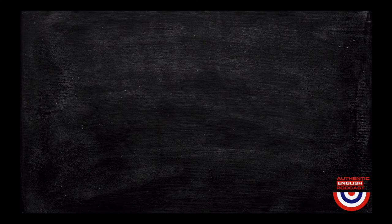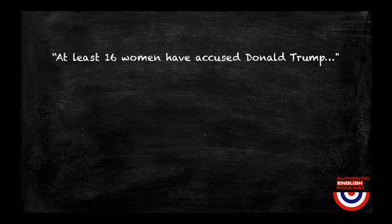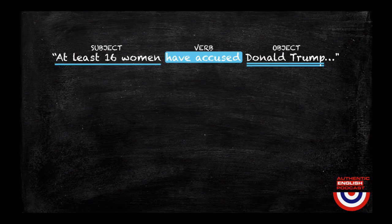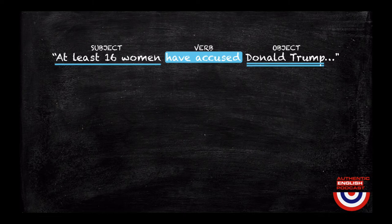Let's say the same examples from a different perspective. Let's analyze two examples from the ABC News article. Example number one: 'At least 16 women have accused Donald Trump.' 'At least 16 women' is the subject, 'have accused' are the verbs, and 'Donald Trump' is the object. Let's suppose we want to shift the focus from the women who have made the accusations to Donald Trump. The sentence would then be: 'Donald Trump has been accused by at least 16 women.' Note that the focus is now Donald Trump.